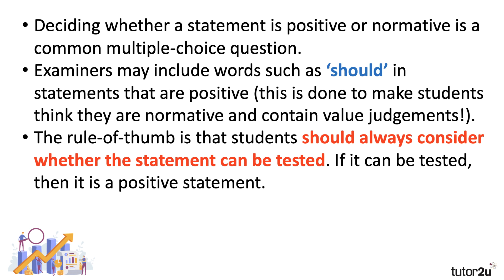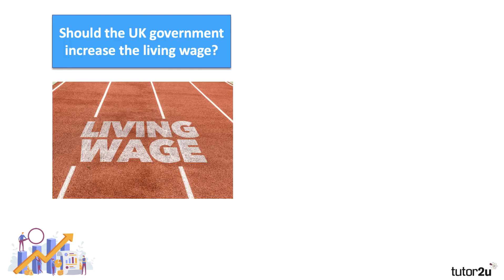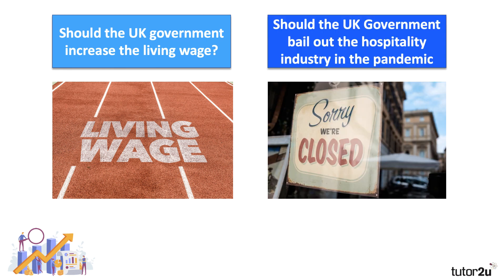The rule of thumb to hang on to is: always consider whether the statement can be tested. If a statement can be tested, then it is indeed a positive statement. Economics is permeated by value judgments of an ethical character at nearly every stage. Should the UK government, for example, increase the living wage? Should people be paid a higher wage rate per hour and should that be protected by law? Should the UK government offer specific financial support, maybe a bailout, to sectors hit hard by the pandemic such as bars, indoor sports, and other businesses in the hospitality sector? These questions invite value judgments to be part of the answer.